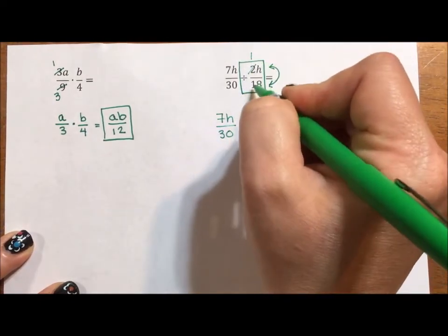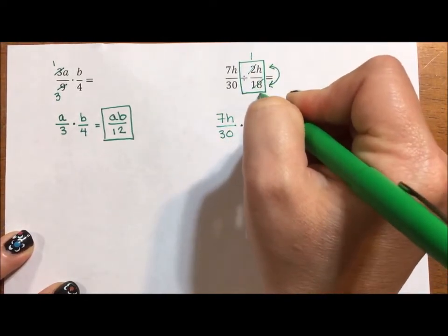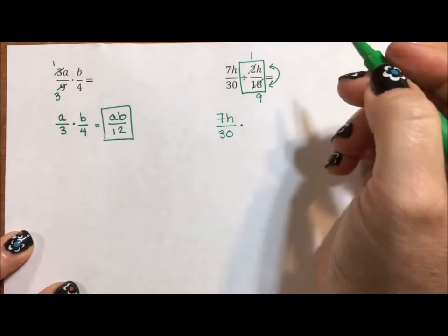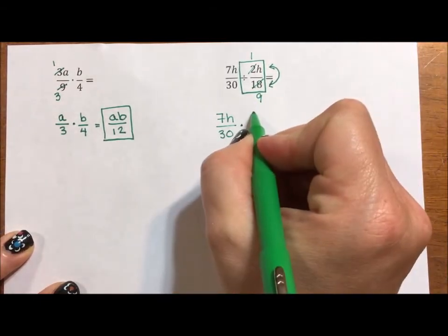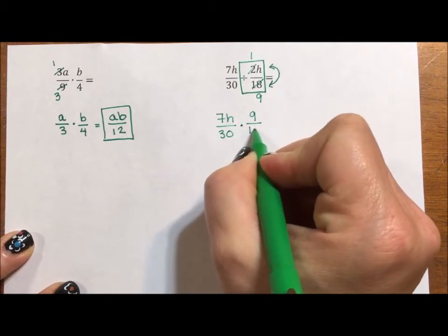2 divided by 2 is 1. 18 divided by 2 is 9. So when I find the reciprocal, I'm going to write this as 9 over 1h.